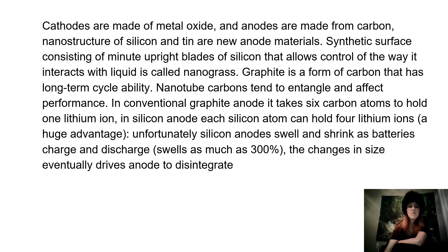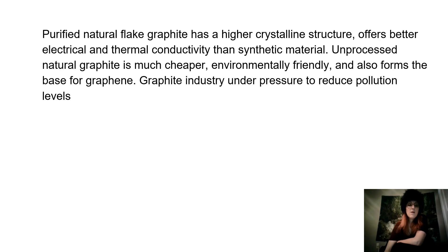Unfortunately, silicon anodes swell and shrink as batteries charge and discharge, swelling as much as 300%. The changes in size eventually drive the anode to disintegrate. Purified natural flake graphite has a higher crystalline structure and offers better electrical and thermal conductivity than synthetic material. Unprocessed natural graphite is much cheaper, environmentally friendly, and also forms a base for graphene. The graphite industry is currently under pressure to reduce pollution levels.